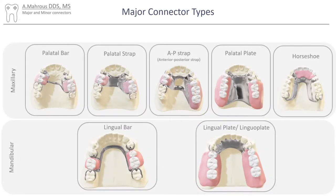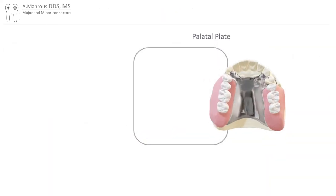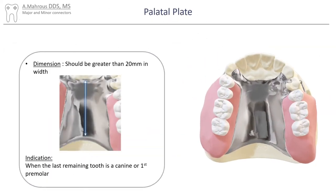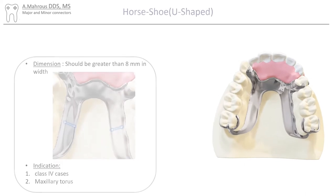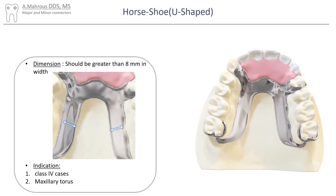Next up, the palatal plate major connector. Palatal plates usually measure more than 20mm and are indicated in distal extension cases where the last tooth is a canine or a first premolar. The horseshoe major connector should be greater than 8mm in thickness and is indicated in class 4 cases as well as cases with a pronounced maxillary tuberosity.